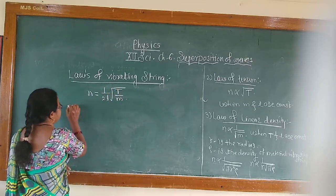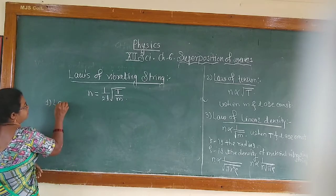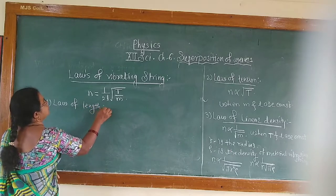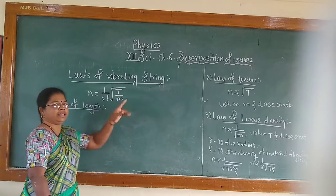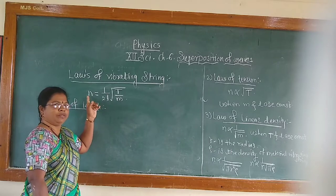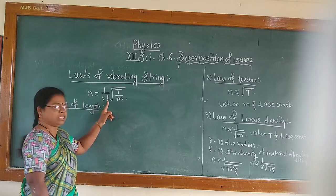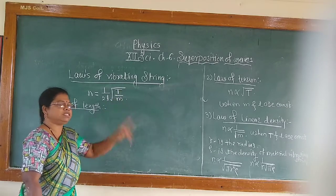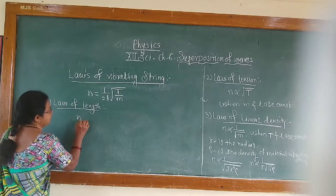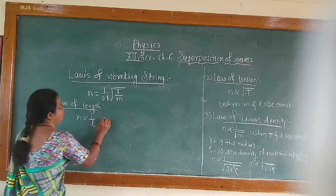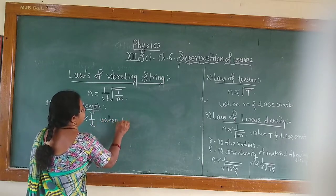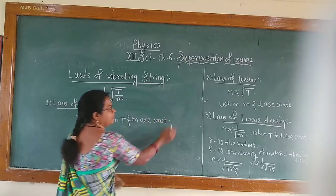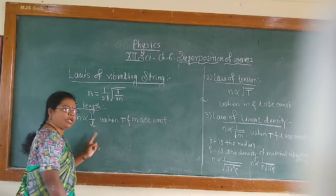After that, from this, first of all, there is law of length. What it tells us is that frequency of the vibration of string is inversely proportional to length when tension and linear density are constant. That is, N is inversely proportional to L when T and M are constant.